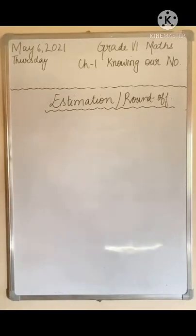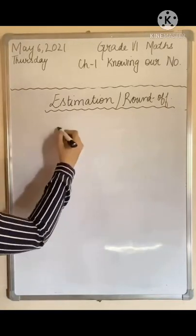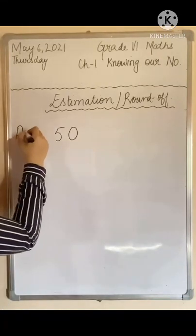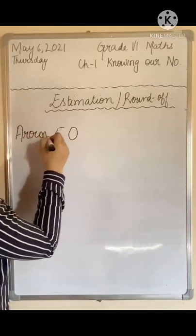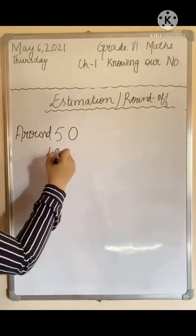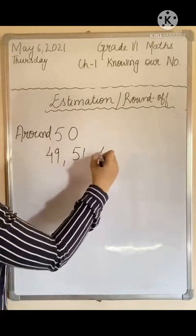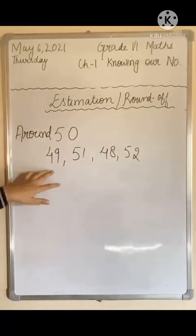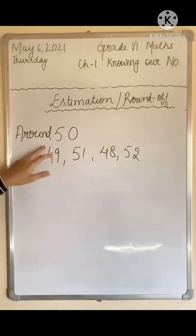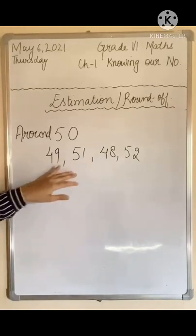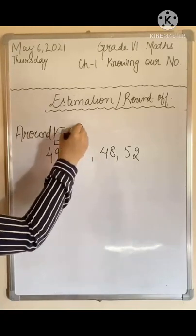All of us must have heard statements like 'around 50 students were late today.' When we say the word 'around' with any number, it means that the actual number can be either 49 or 51, 48 or 52. But instead of using all these numbers, we simply denote them by using 'around 50.' This is called an estimation of all these numbers.